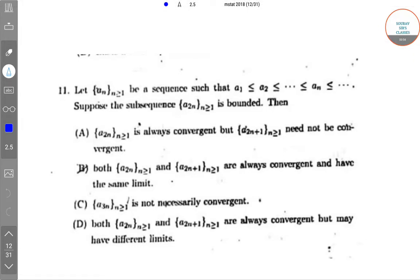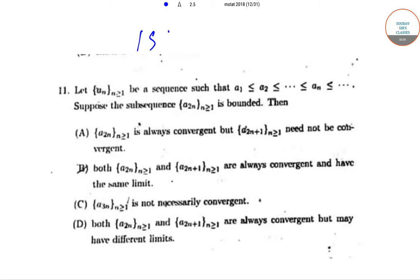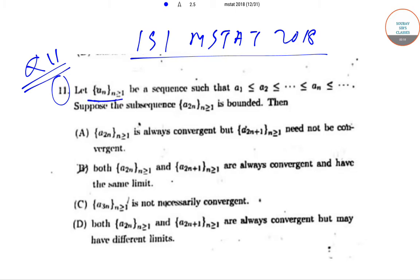Hello students, welcome to Solve This Classes. Today we'll be solving the ISI M.Stat question paper of year 2018. Today we'll be solving question number 11 from the paper. In question number 11, it has been said that let a_n, where n is greater than or equal to 1, be a sequence such that a1 ≤ a2 ≤ a3 and so on.